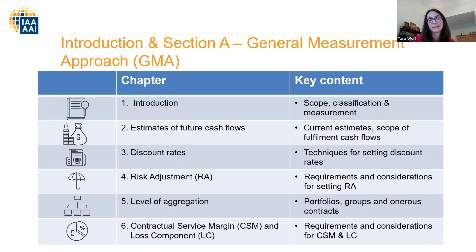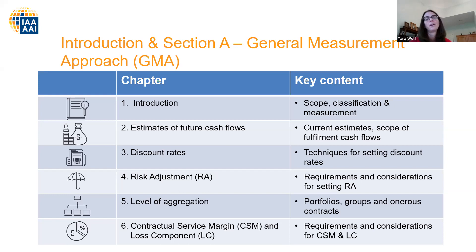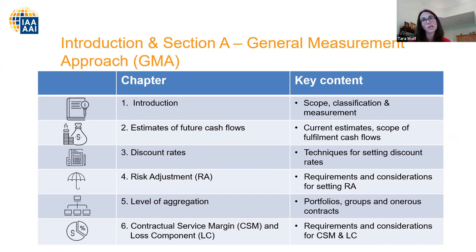Chapter six gets into the CSM and loss component — arguably one of the most important chapters, because CSM amortization is the basis upon which profits are recognized in the business. Key areas covered include how to determine coverage units for CSM amortization. The reinsurance elements of the CSM are quite complex, looking back to direct contracts — so some of those interactions between the reinsurance CSM and the direct CSM are covered here. A very useful chapter for practitioners to refer to in terms of emerging practice.